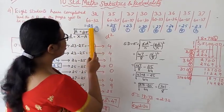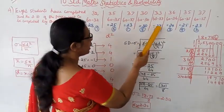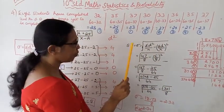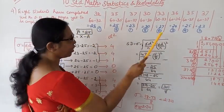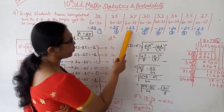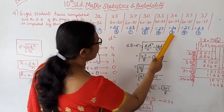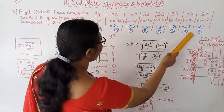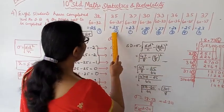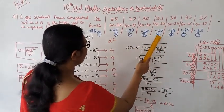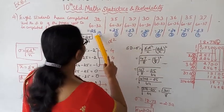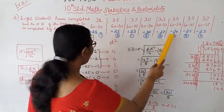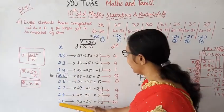Now we find the standard deviation of the values 28, 25, 23, 30, 27, 24, 25, 23. Arranging in ascending order: 23, 23, 24, 25, 25, 27, 28, 30.